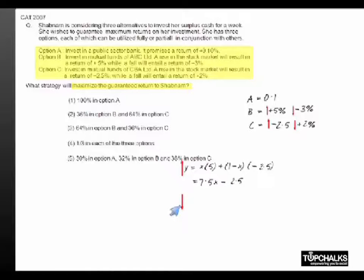In the event of stock market dropping, similarly we will find that the return on investment will be X times minus 3 plus 1 minus X times 2, which is equal to 2 minus 5X.